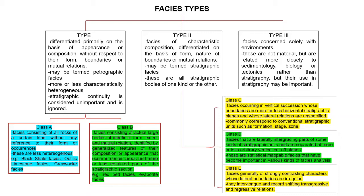Type two facies consists of characteristic compositions differentiated on the basis of form, nature of boundaries, or mutual relationships. In type one, form boundaries and mutual relations were not important. In type two — called stratigraphic facies — the mutual relationship between different facies, their form, and boundaries are important. So type one is petrographic facies and type two is stratigraphic facies.